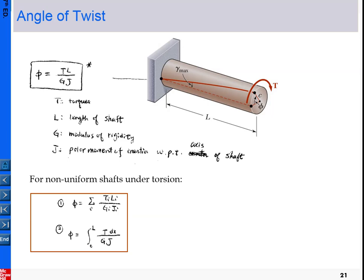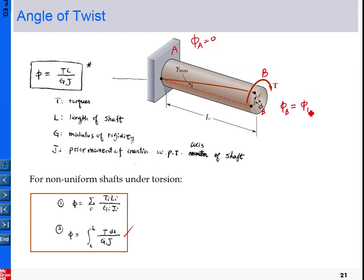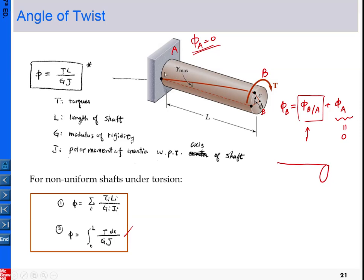Before looking at more examples, I want to give further descriptions of the application of our generic formula. Again, this is our template composed of end A and end B. End A is fixed against the wall, so there is no angle of twist there — φ_A equals zero. We measure the angle of twist φ at B, so φ_B equals φ_B relative to A plus φ_A.